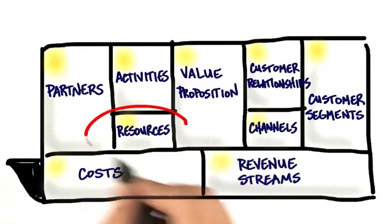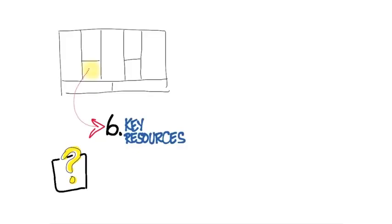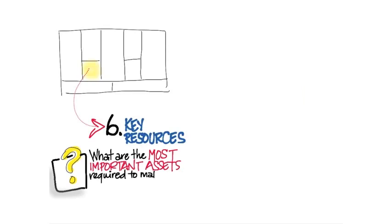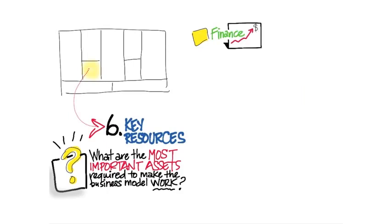The next piece you want to think about is what are the key resources? What do you need to make the business model work? What assets are important? And what's an example of an asset in a key resource? Well, finance. Do you need capital? Do you need a line of credit?